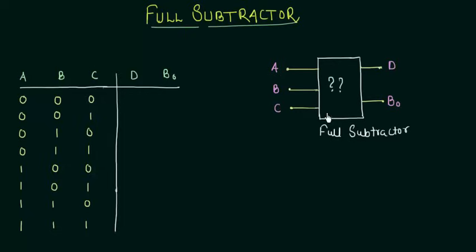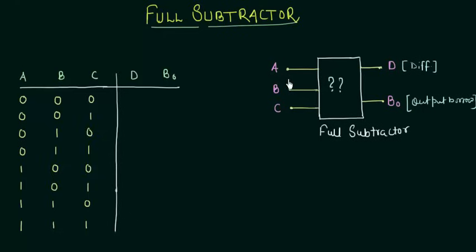There are three inputs to this full subtractor: A, B, and C, and two outputs D and BO, where D is your difference and BO is your output borrow. A is the number from which you want to subtract B and C, and C is your borrow from the next stage.